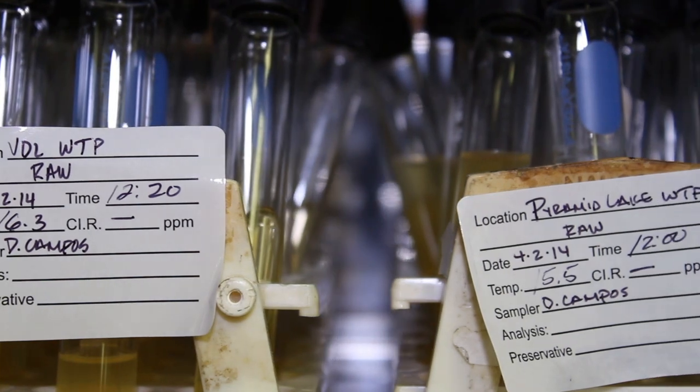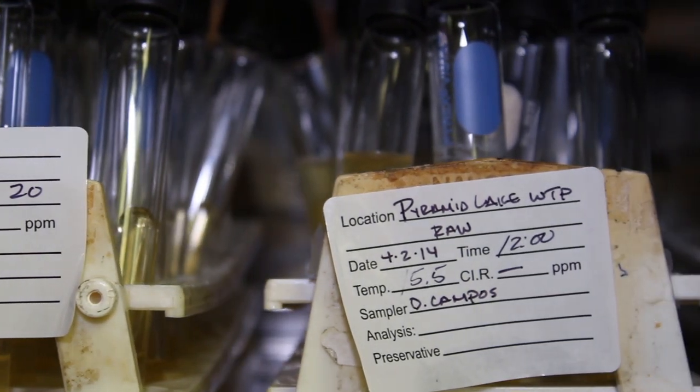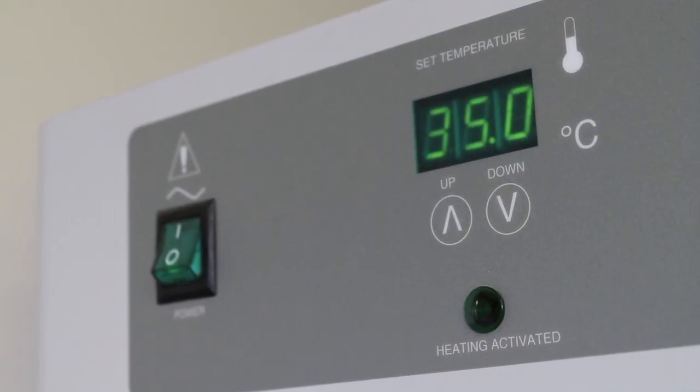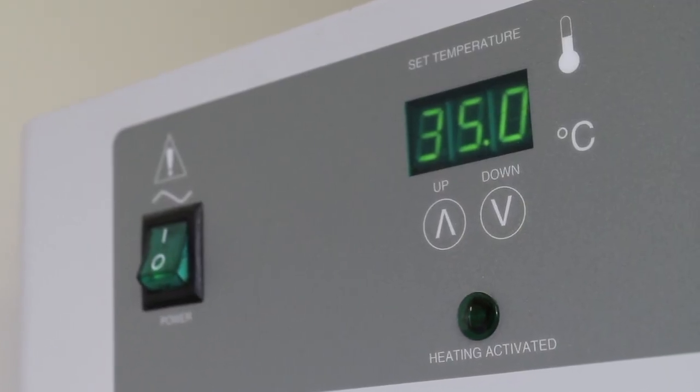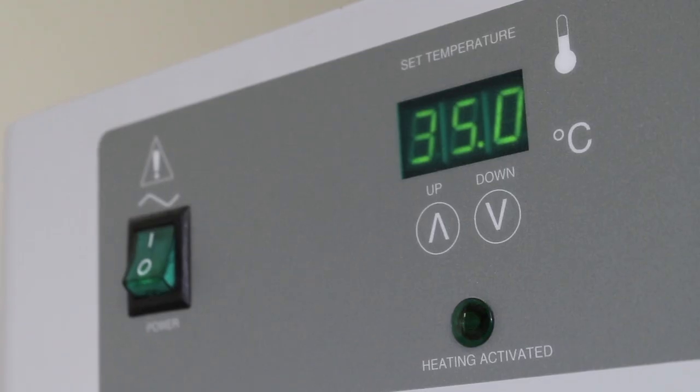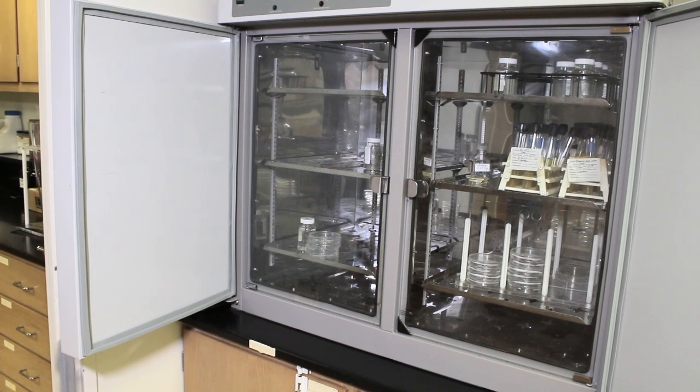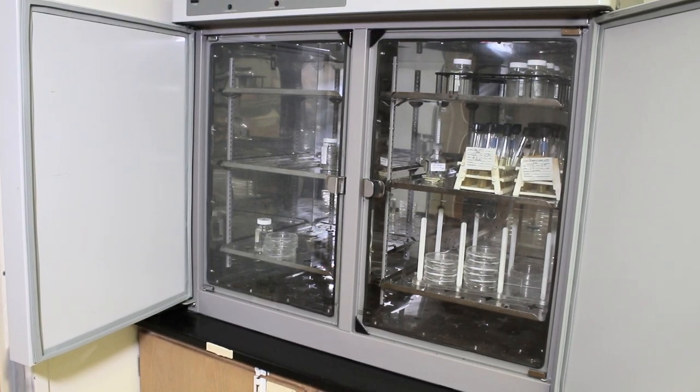The incubator is a laboratory device that provides a dark, constant temperature environment. The temperature is 35 degrees Celsius, approximately human body temperature. Together with the supply of food and water, the incubator is an ideal growth environment for the coliform bacteria.